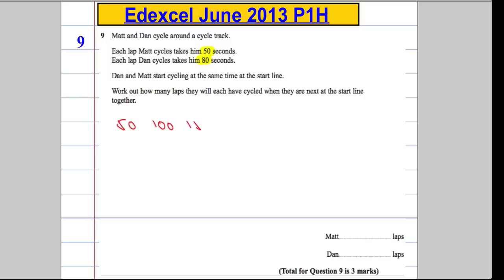One of the easiest ways to do it is to just list out all the multiples of 50, and then follow that by listing out all the multiples of 80. I'm going to stop at 400 — I have a hunch — and then I'm going to list out the 80 times table up to 400.